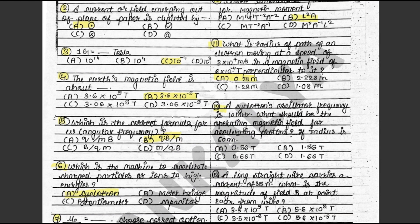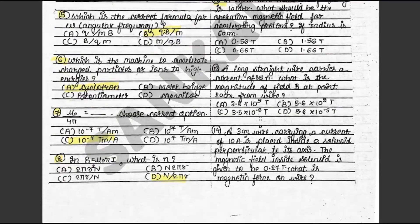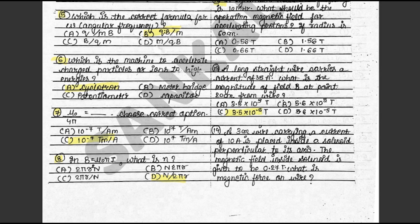Question 13 (Question 30 in transcript): A long straight wire carries a current of 35 ampere. What is the magnitude of field B at 0.20 cm from the wire? The answer is C: 3.5 × 10⁻⁵ Tesla. This is in the textbook exercise 2.